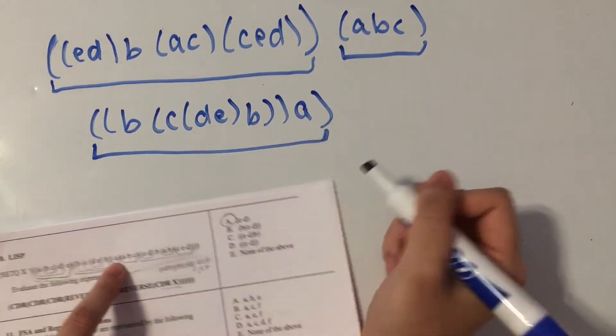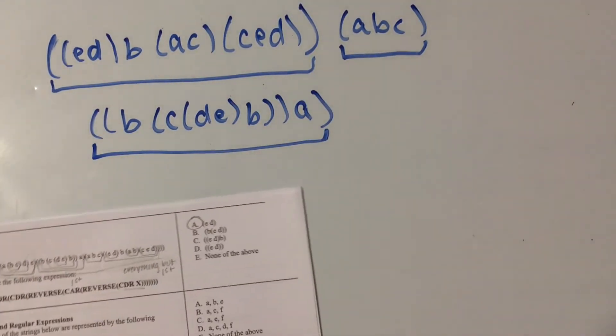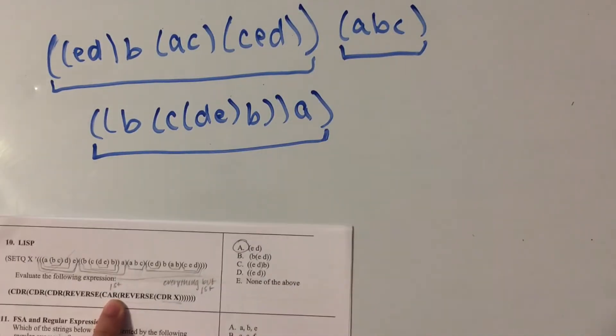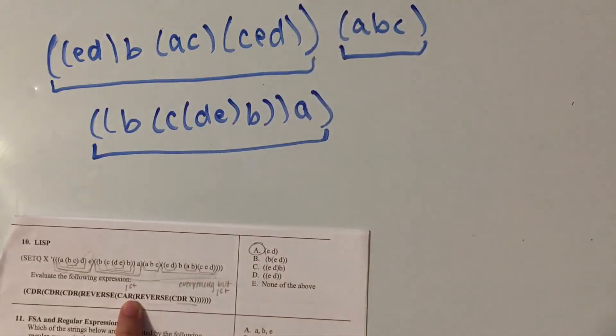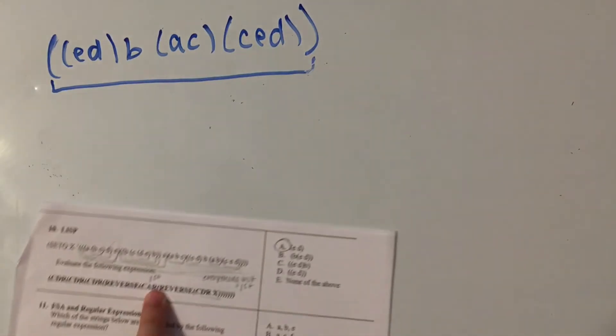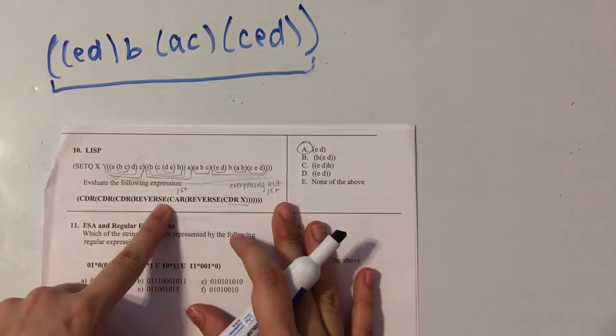So this is the third element in our list. Okay, so we did cutter, we did reverse. Now we do car, which is you take only the first element. So these two are gone. So it's looking a lot better now and a lot less complex.